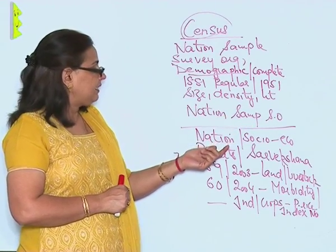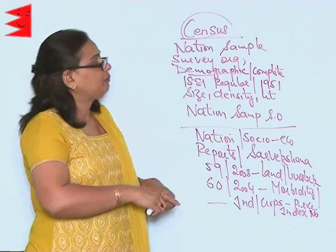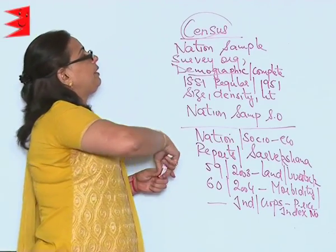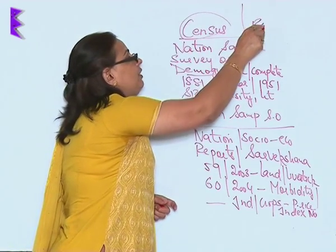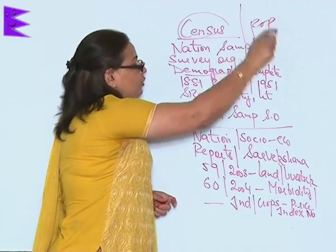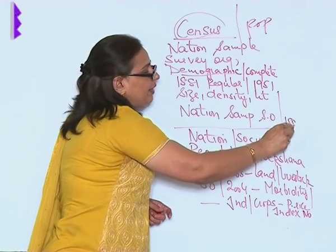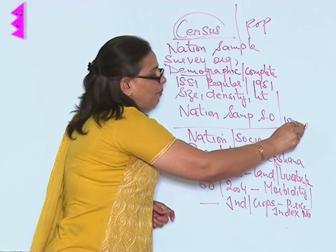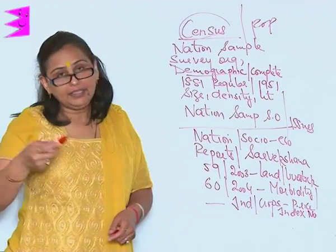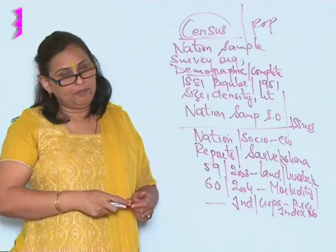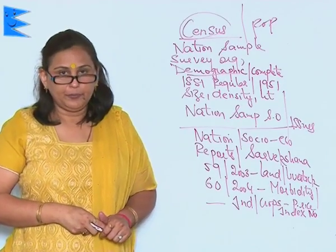To summarize, the census provides complete information on demographic details related to population, whereas the NSSO focuses on issues related to the population — such as health, economic, and social concerns. And that was all about this chapter. Thank you.